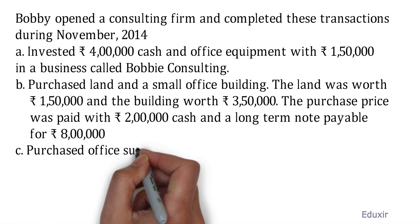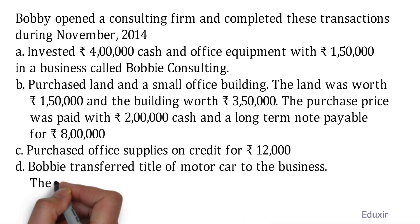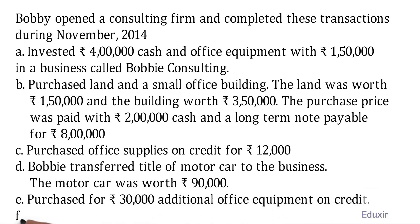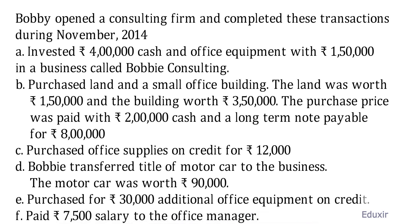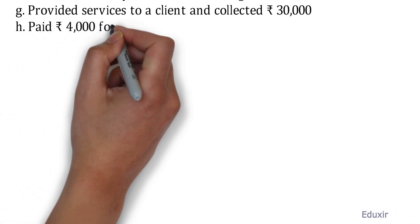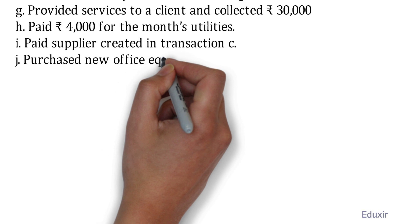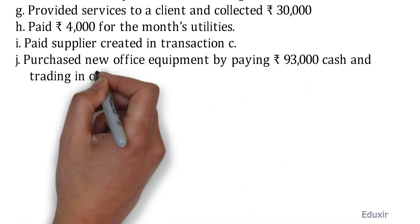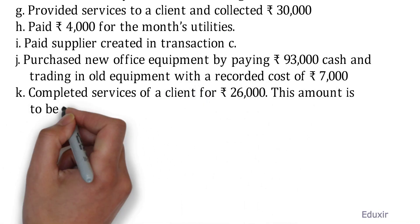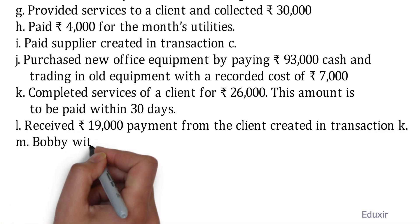Purchased office supplies on credit for 12 thousand rupees. Bobby transferred title of motor car to the business — the motor car was worth 90 thousand rupees. Purchased 30 thousand additional office equipment on credit. Paid 7,500 salary to the office manager. Provided services to a client and collected 30 thousand rupees. Paid 4 thousand for the month's utilities. Paid supplier created in transaction C. Purchased new office equipment by paying 93 thousand cash and trading in old equipment with a recorded cost of 7 thousand rupees. Completed services for a client for 26 thousand rupees — this amount is to be paid within 30 days. Received 19 thousand payment from the client created in transaction C. Bobby withdrew 20 thousand rupees from the business.